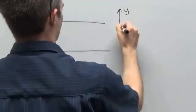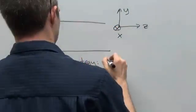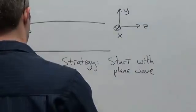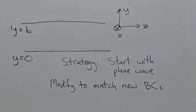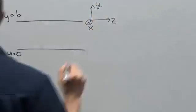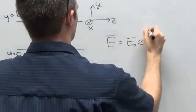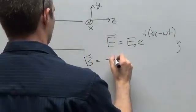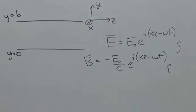Our strategy will be to start with a plane wave trial solution, and then modify things as needed to fit the boundary conditions. So we'll use E equals E_0 e to the i(kz minus omega t) j hat, and B equals minus E_0 over c e to the i(kz minus omega t) i hat, with the directions, as usual, chosen such that E cross B gives the direction of propagation.